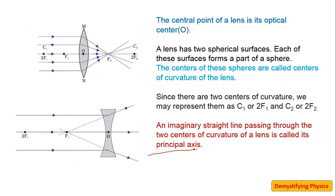The next term is principal axis. It is the imaginary line which joins the two centers of curvature.